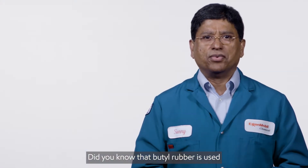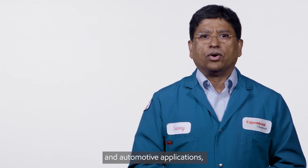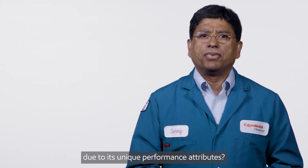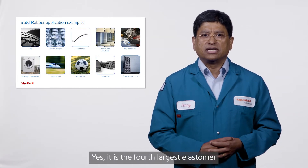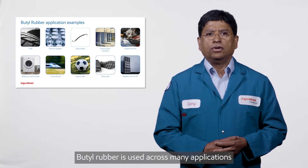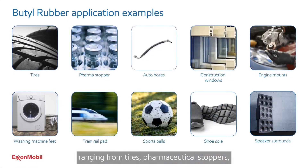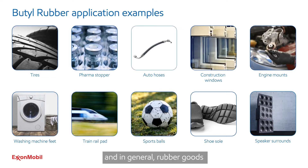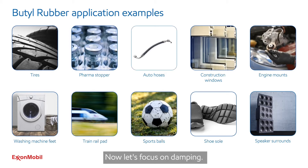Did you know that Butyl Rubber is used in a number of industrial, consumer, and automotive applications due to its unique performance attributes? Yes, it is the fourth largest elastomer by volume used in the rubber industry. Butyl Rubber is used in many applications, ranging from tires, pharmaceutical stoppers, hoses, adhesives and sealants, sporting goods, and in general, rubber goods for automotive, industrial, and consumer products.